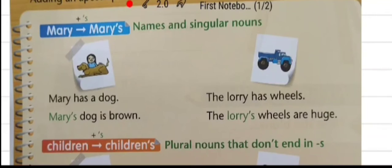For example, Mary has a dog. Mary's dog is brown. Here, Mary is a singular noun. And the apostrophe S shows that the dog belongs to Mary which is brown in color.